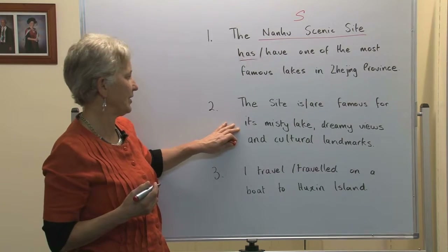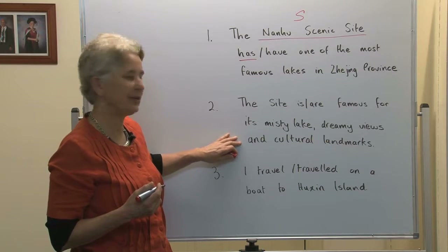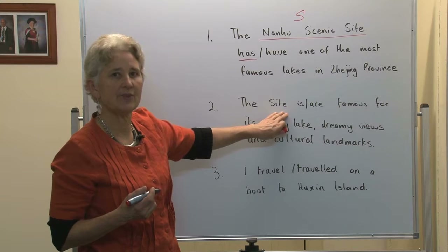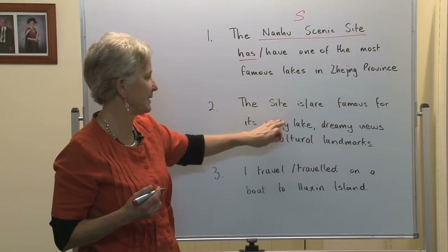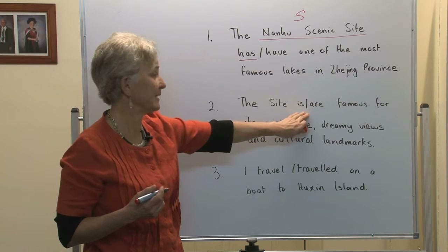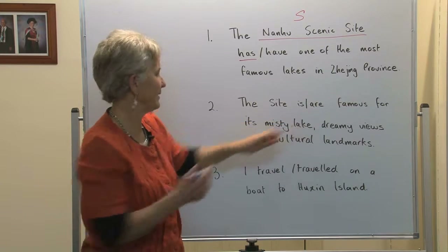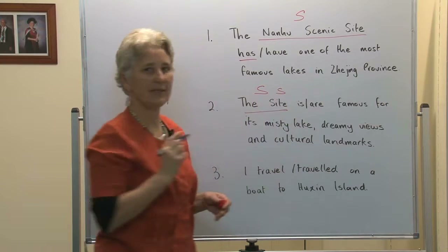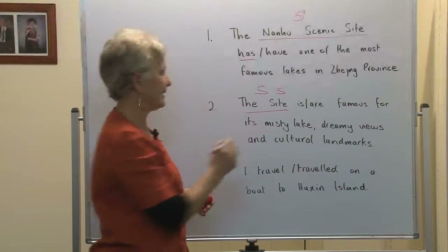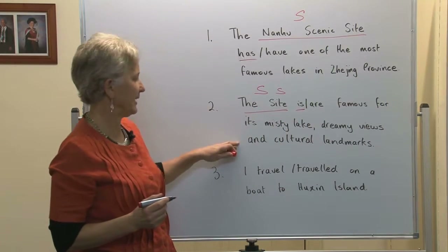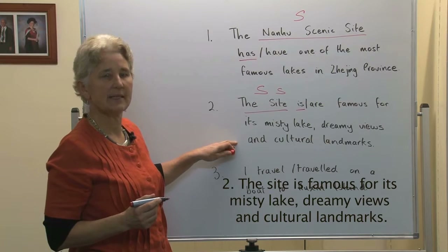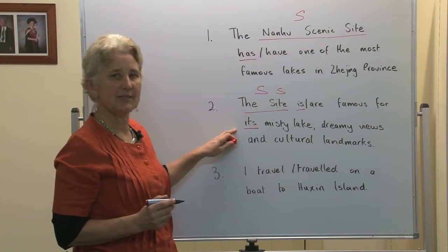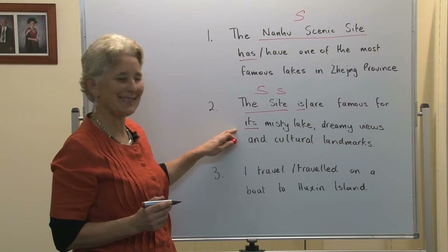Number two: the site is famous for its misty lake, dreamy views and cultural landmarks. Once again, the site is the grammatical subject of this sentence because it is telling us what is famous. The site is the subject. There is only one site. It has a singular verb — is famous for its misty lake, dreamy views and cultural landmarks. It is in the present tense because it is always true. Notice the possessive adjective is also in the third person singular: its.